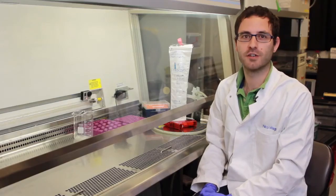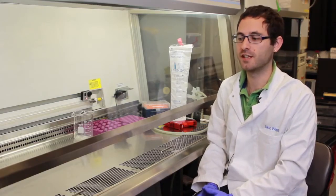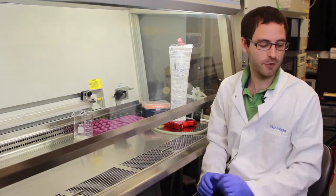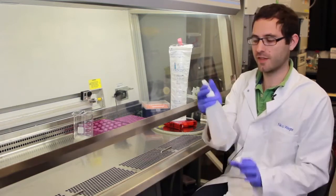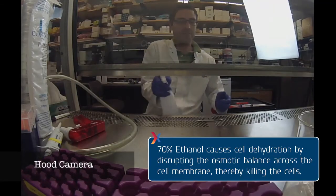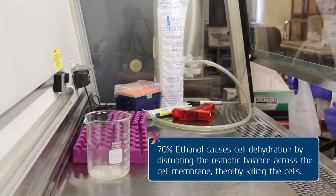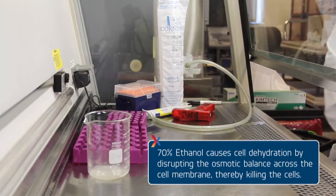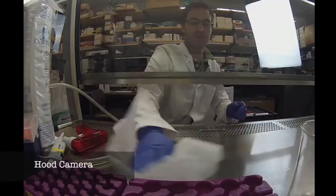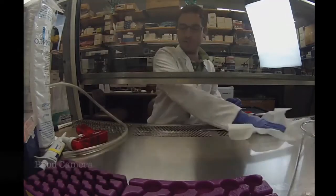For working with tissue culture, one of the most important things is to keep a sterile working environment. So before touching anything inside the hood, it's important to spray everything down with ethanol. We use 70% ethanol and I'm just going to quickly spray everything down in here that I'll be using. I'm going to wipe it up to make sure no residual ethanol gets in my way.